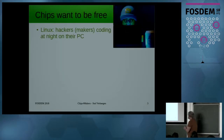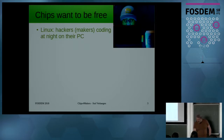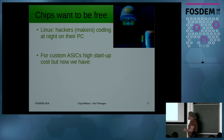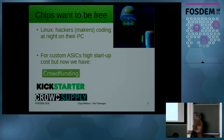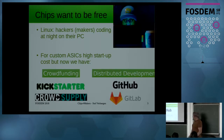Twenty years ago, people started the Linux movement, which is one of the big contributors to the open-source movement. People could just hack at night at their PC and do a lot of things. But up to now, you cannot do that for ASICs. Custom ASICs have higher startup costs, but now maybe time has changed — you have crowdfunding, so you can share startup costs. And you can do distributed development through GitHub and GitLab.